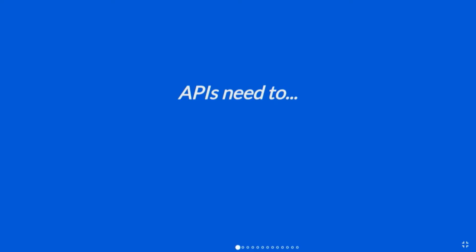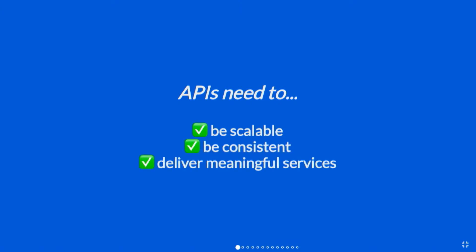For API development in general, they need to be a few things. They need to be scalable — you never really know how large that data set is going to get. They also need to consistently deliver meaningful services, whether that's a response you always need or a mapping to another API, with at least a consistent failure response. These are the three things that always need to be true for an API to be reliable.